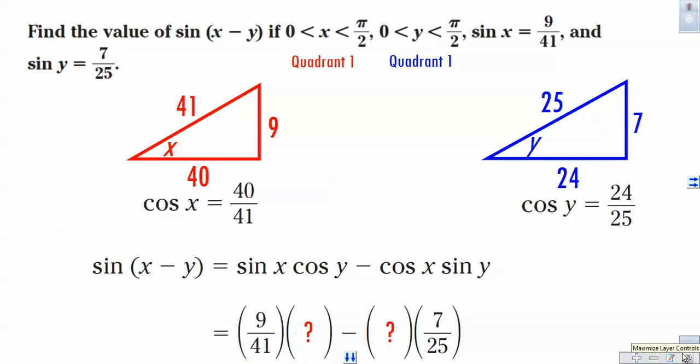So now with adjacent over hypotenuse here, cosine x is 40 over 41, which now we're going to plug that right in there. And if the cosine of y is 24 over 25, we're going to plug that right in there.